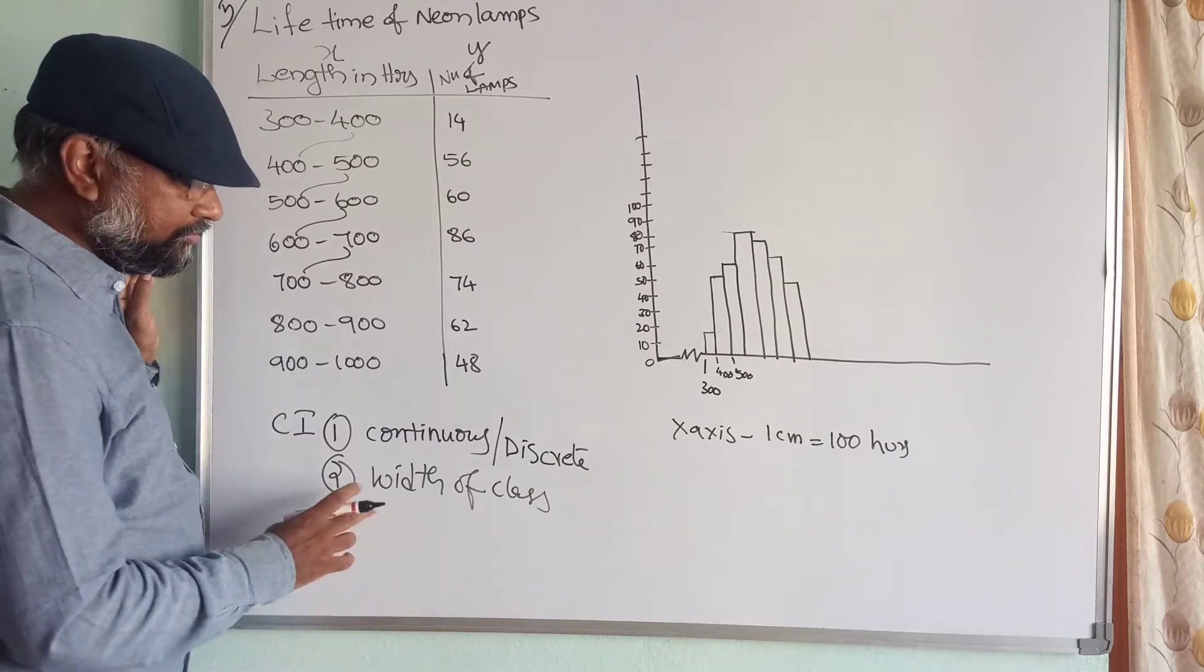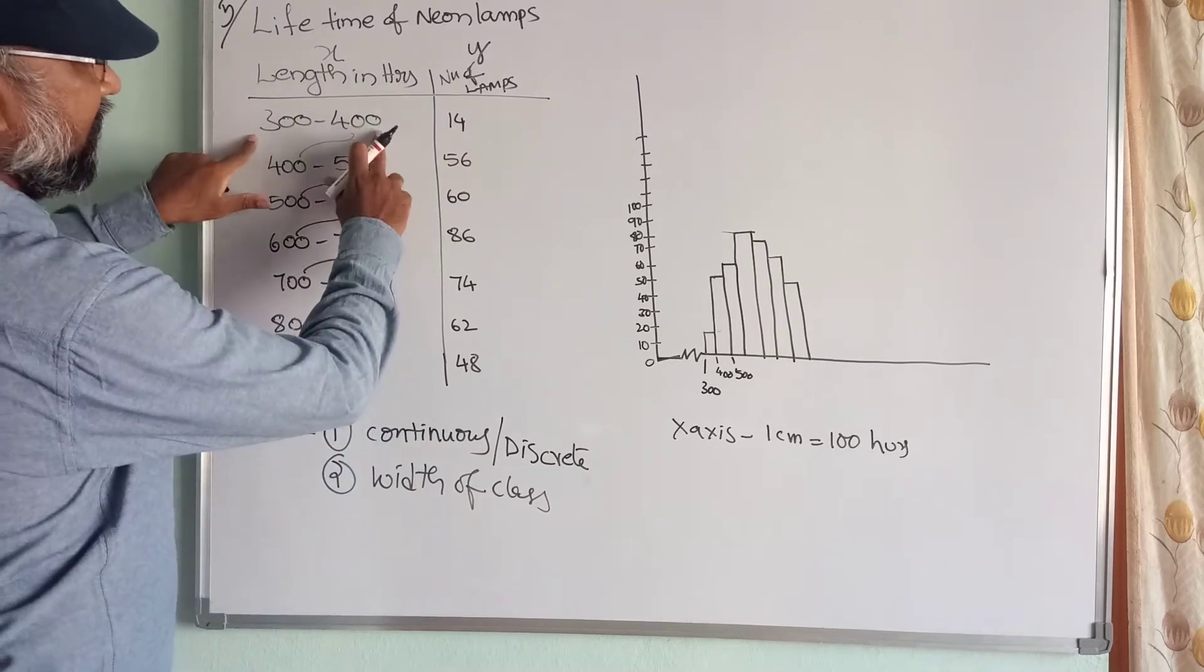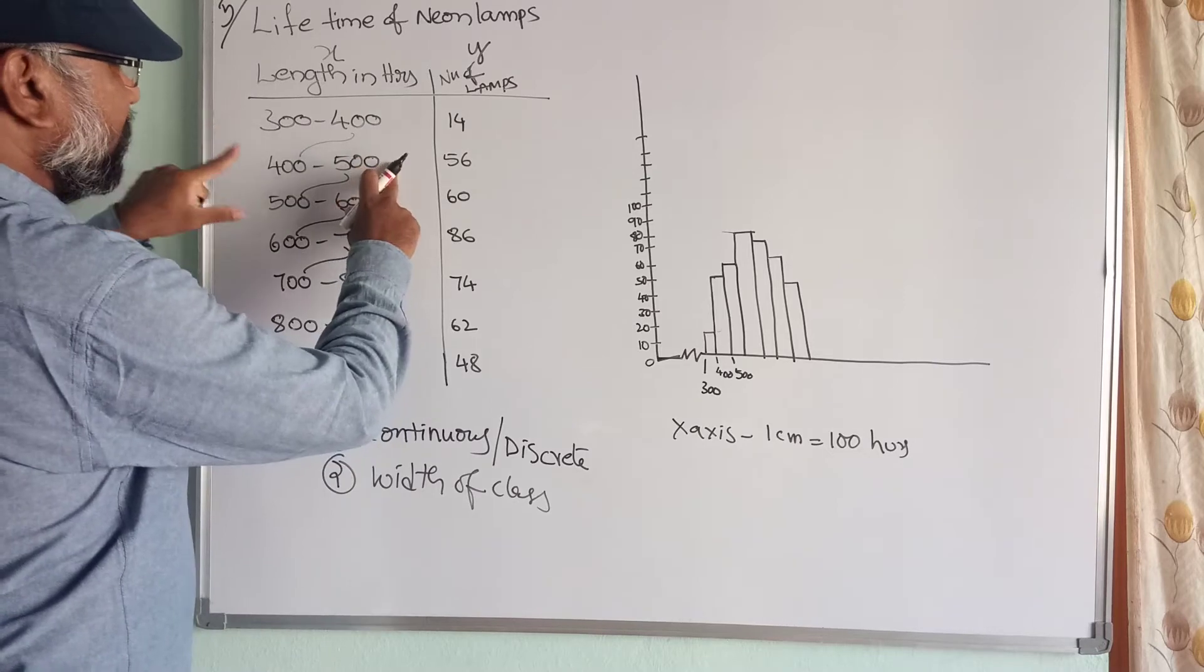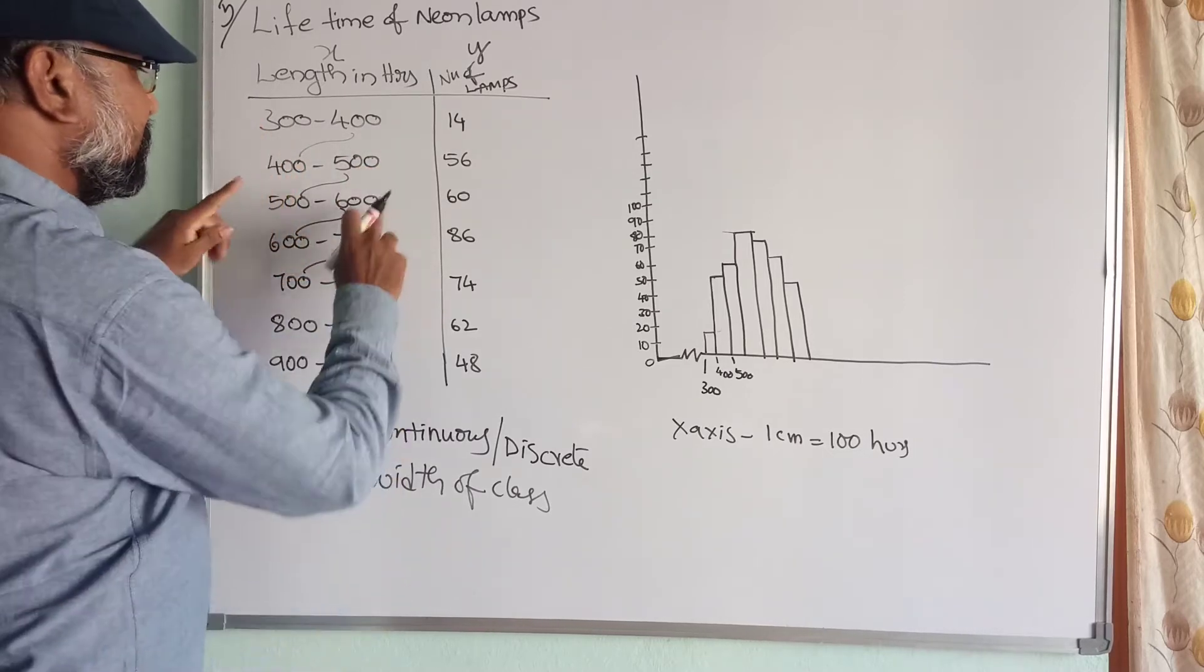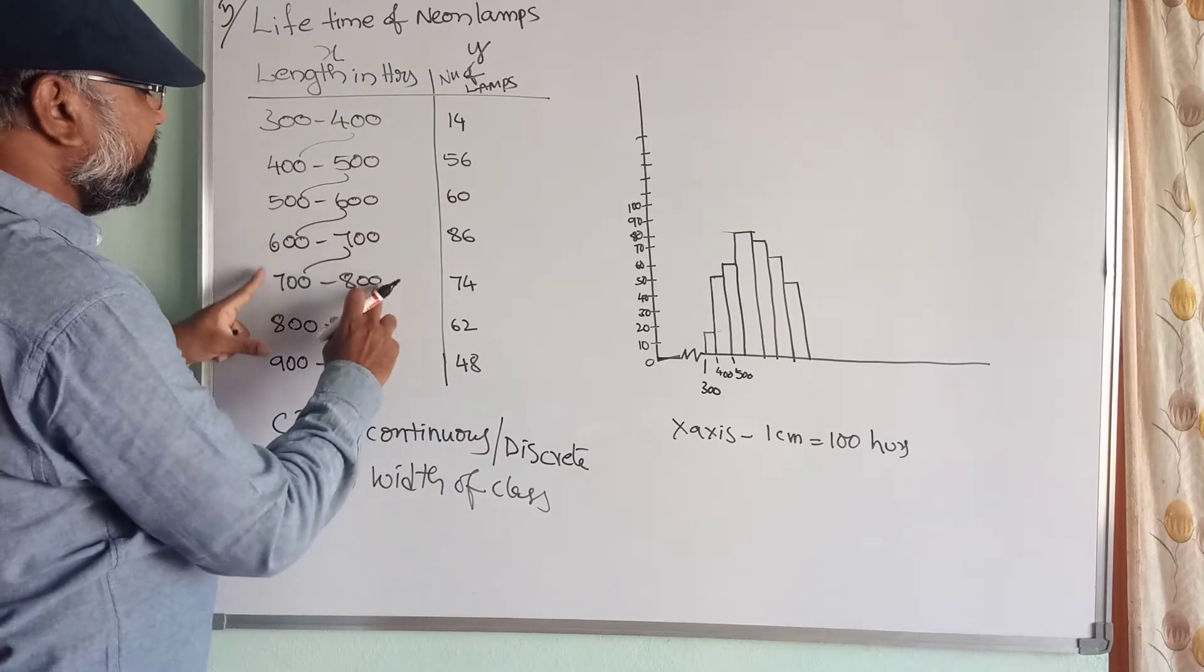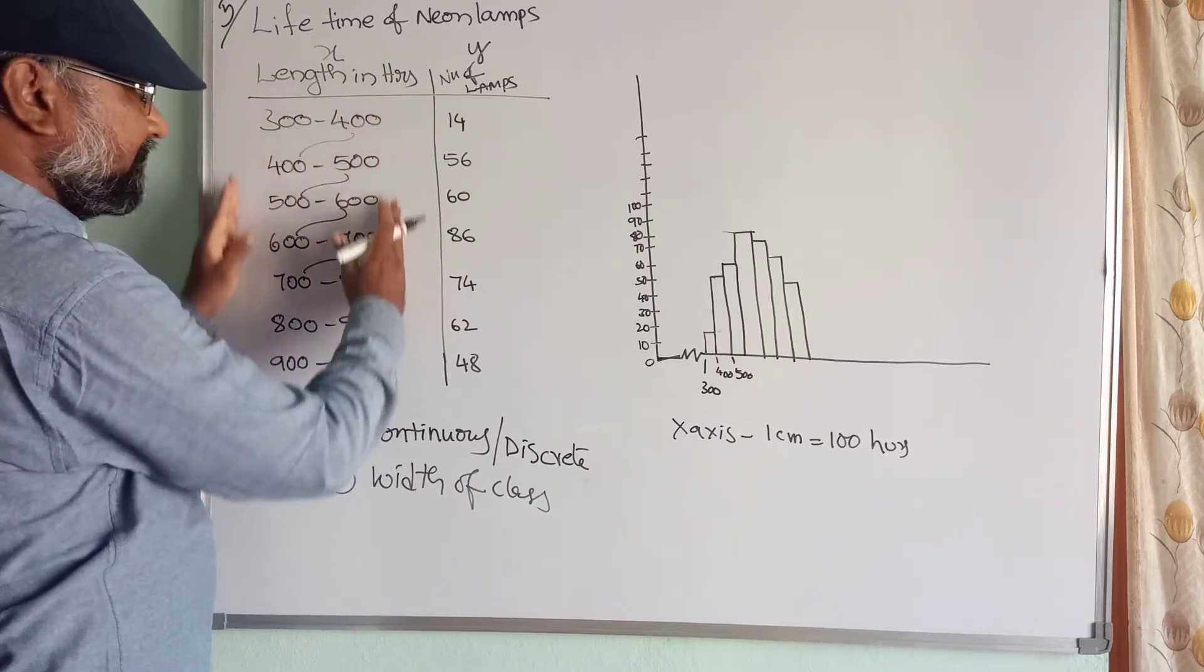The third point what we have to check is the width of the class. Here the width of the class is 400 minus 300 is 100, 500 minus 400 is 100, 600 minus 500 is 100. Likewise, the difference is 100. It is constant for every class.